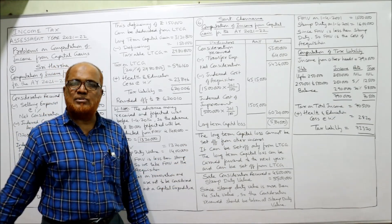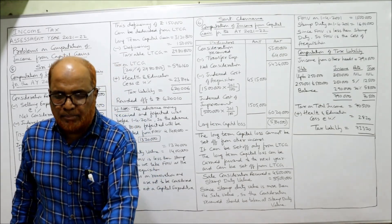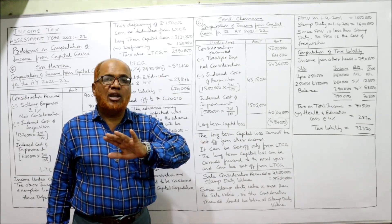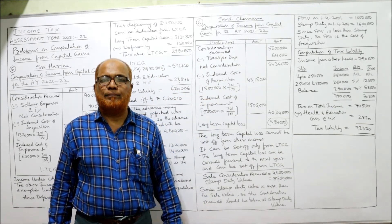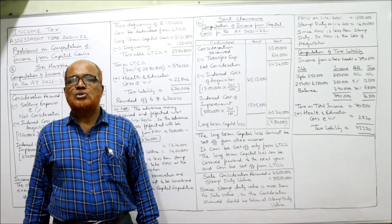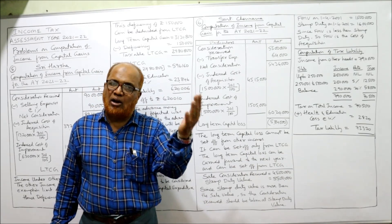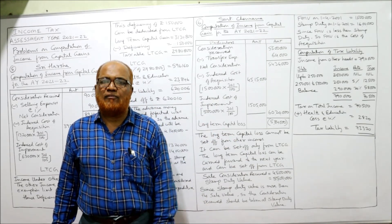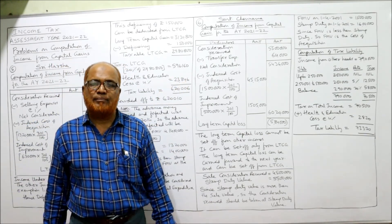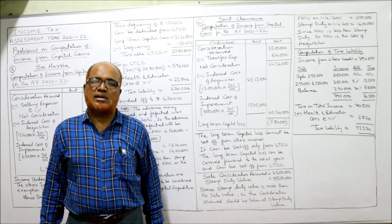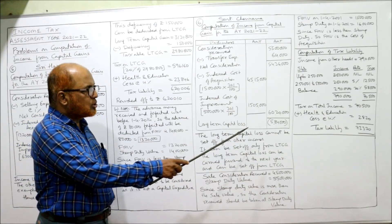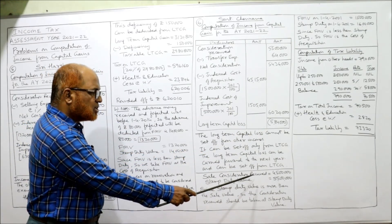The long-term capital loss cannot be set off from other incomes. The Income Tax Act provision states that long-term capital loss can be set off only from long-term capital gain. If a person has both LTCG and LTCL, they can be set off. Otherwise, this long-term capital loss can be carried forward to the next year and in that year set off only from LTCG. So our capital gain solution stops here.